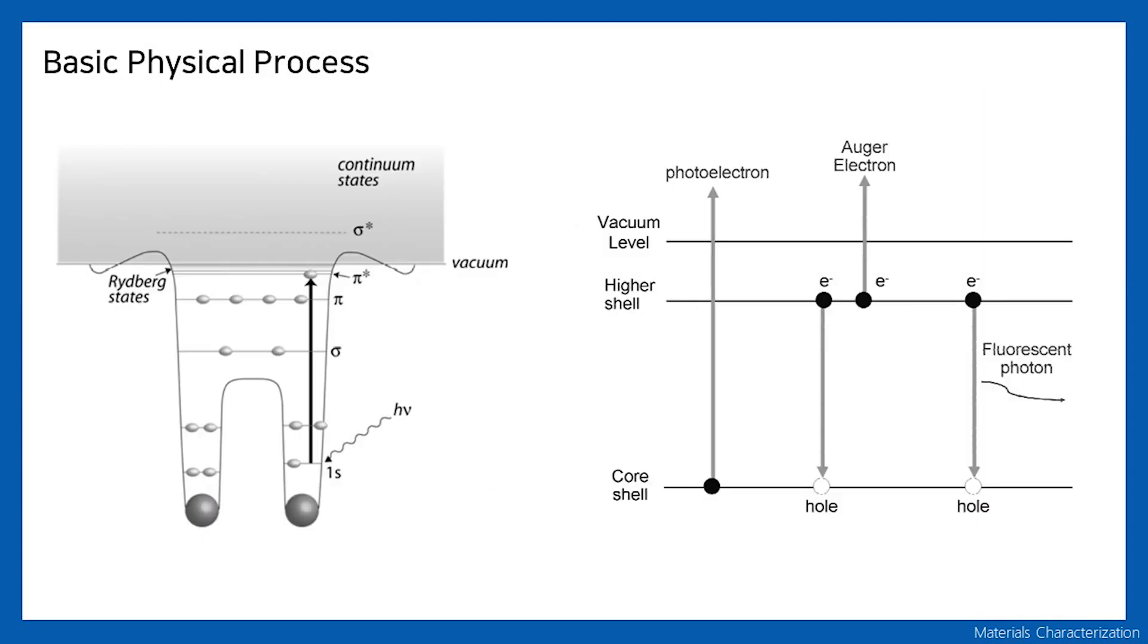The photon energy from the incident X-ray excites core electrons to the continuum state above the vacuum level, or to the unoccupied electron orbit below the vacuum level, that is the Rydberg state. The hole created by the escape of electrons is filled with other electrons of the higher shell, and energy is released. This energy is transferred to another electron and releases it to the outside of the material, which is the main mechanism by which electrons are released via Auger decay.